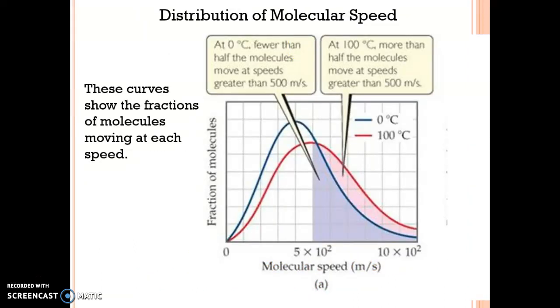So here is a blurry graph, here is a distribution curve for molecular speeds at two different temperatures. So notice that the blue line is at zero degrees, you have a much larger percentage of molecules at a low temperature, as opposed to the hundred degrees,